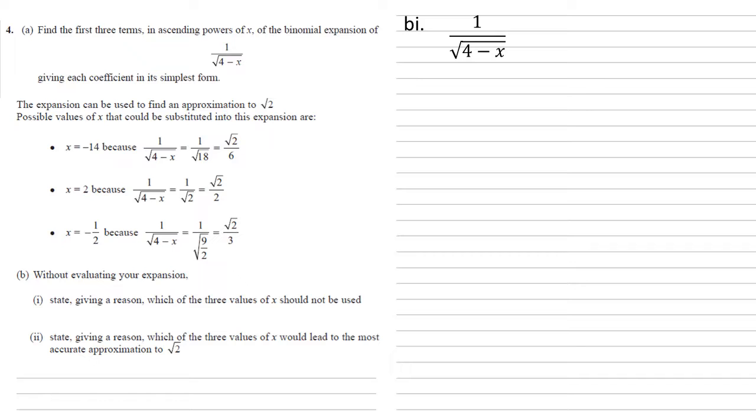So we've done an expansion of 1 over root 4 minus x. Whenever we do a binomial expansion, we know that the modulus of this x has to be smaller than the 4 because we've got 4 minus x. This is just the rule of binomial expansion to memorise. Now as modulus of x has to be smaller than 4, we know that it can't be minus 14, hence this is the one that we're not going to use.